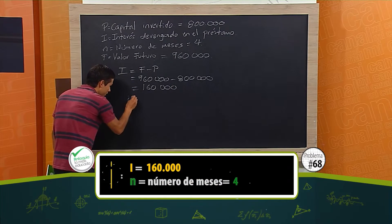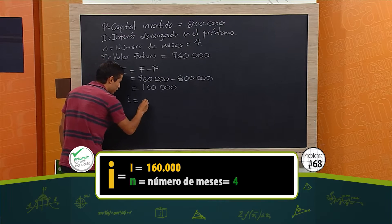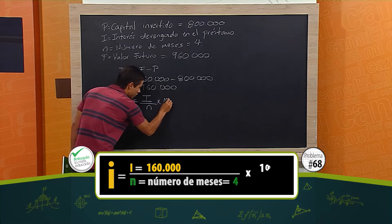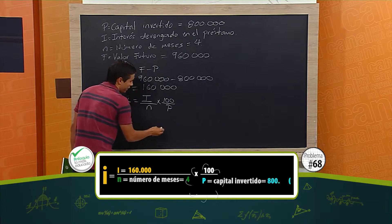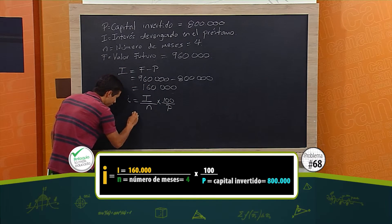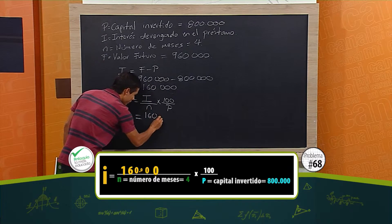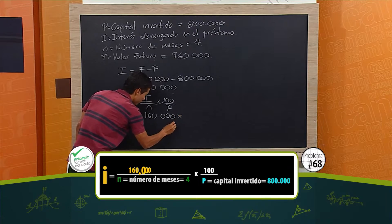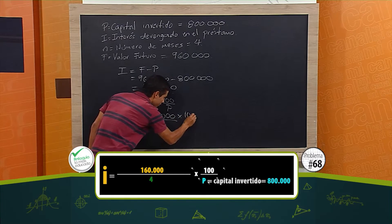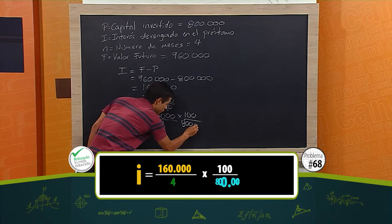I minúscula va a ser igual al interés mensual. Va a ser el interés devengado sobre N, por 100 sobre P. Este factor, 100 sobre P, es lo que nos va a dar el porcentaje. Entonces, I es igual a 160 mil sobre N, que son 4 meses, por 100. Y P va a ser el capital inicial, que son 800 mil.